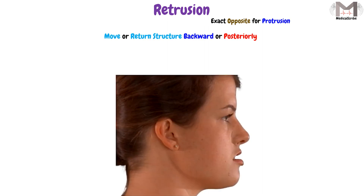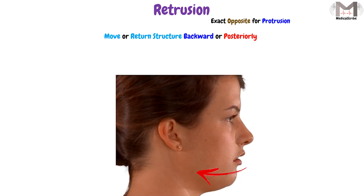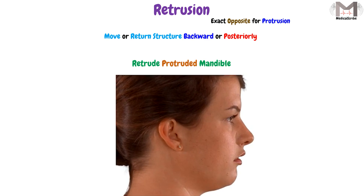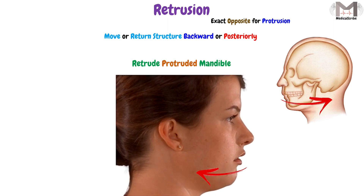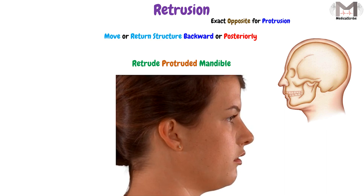The retrusion, on the other hand, is the exact opposite of protrusion, in which we move or return the structure backward or posteriorly. Like when we retrude a protruded mandible — we move the mandible posteriorly or backward, returning it to its normal position from a protruded position. So retrusion means to move the structure posteriorly or backward.